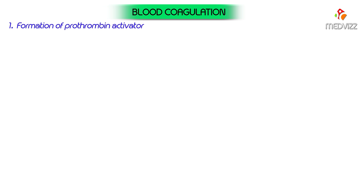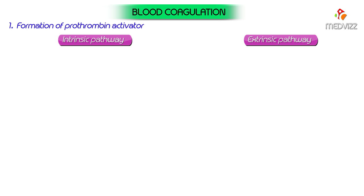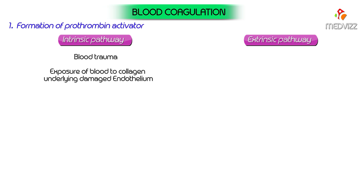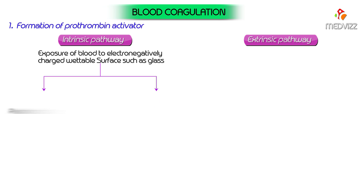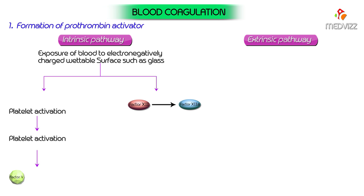Intrinsic pathway: blood trauma or exposure of blood to collagen underlying damaged endothelium, or exposure to an electronegatively charged wettable surface such as glass, leads to platelet activation as well as activation of factor 12 to factor 12a. Platelet activation causes activation of factor 5 to factor 5a. Activated factor 12a leads to activation of factor 11 to factor 11a.